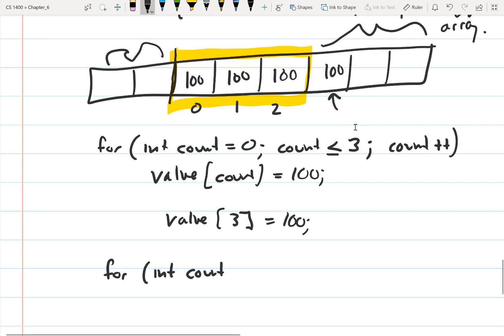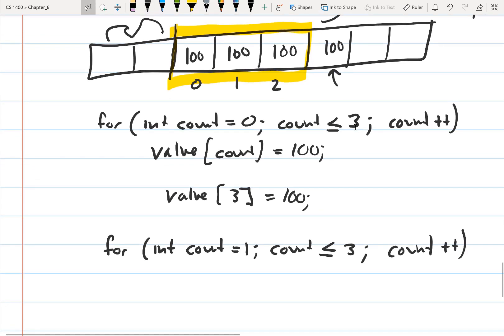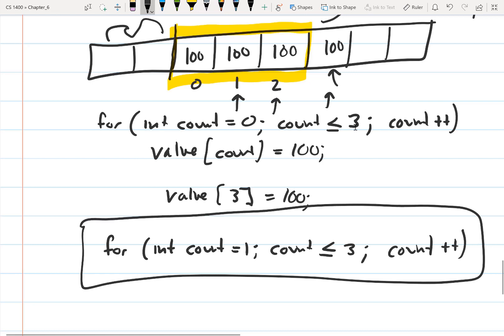which in some programming languages it does? So then you do int count equals 1, count less than or equal to 3, count++. This looks reasonable, except now we're starting at 1 rather than 0. And then we're going to go to 1, 2, 3, so we still run off the end. This right here is a really common error.